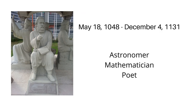Omar Khayyam was born on May 18, 1048 and died on December 4, 1131. He was an astronomer and mathematician known for his scientific achievements. He was also a poet, and his Rubaiyat is probably the most popular Asian poem in the West.